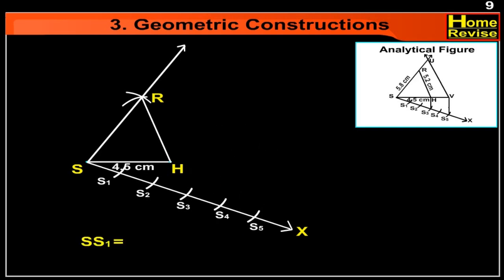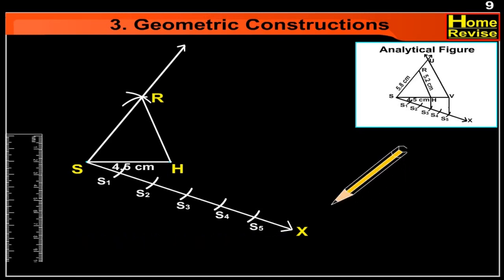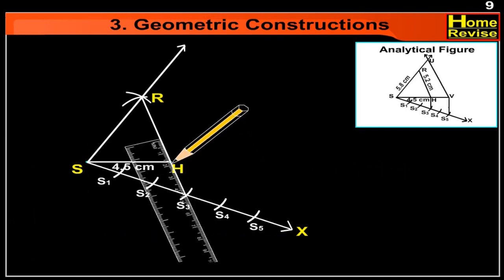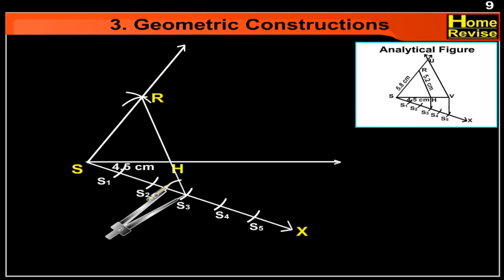SS1 is equal to S1S2 is equal to S2S3 is equal to S3S4 is equal to S4S5. Now let us join S3H and draw a line through S5 parallel to S3H to meet SH produced to B.